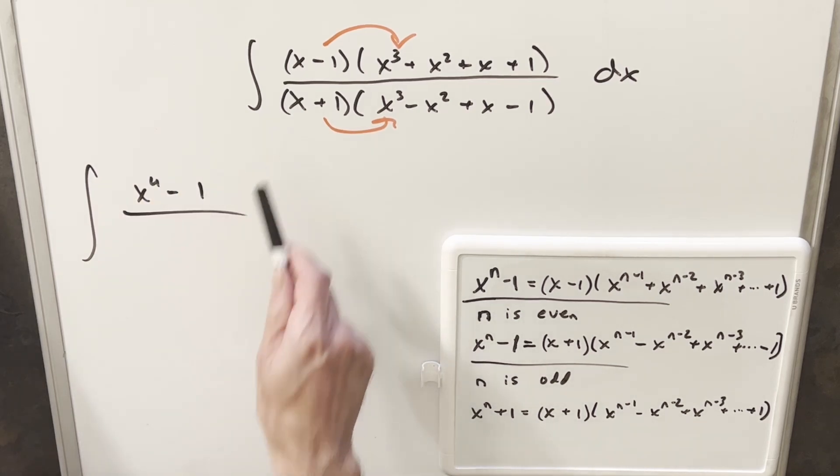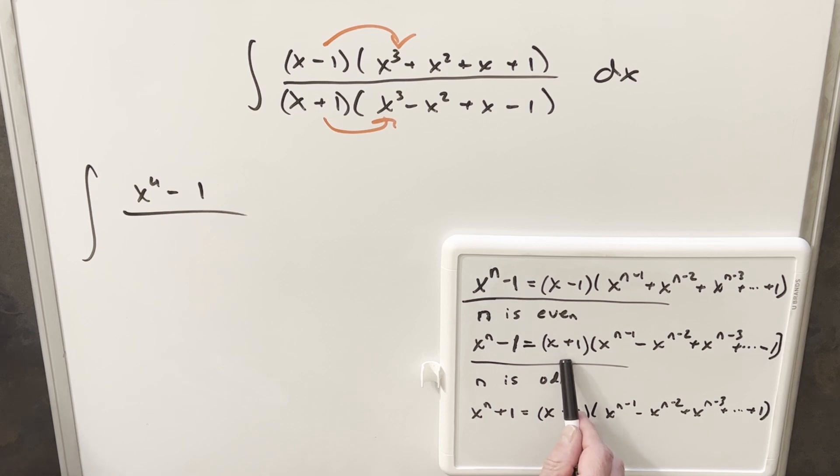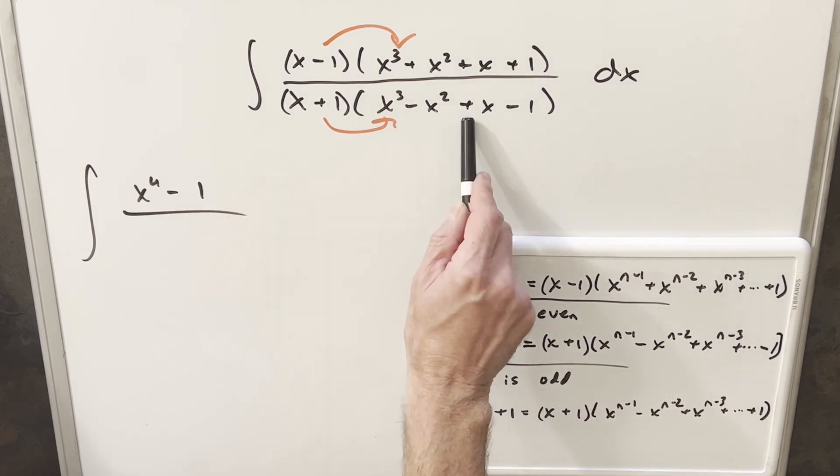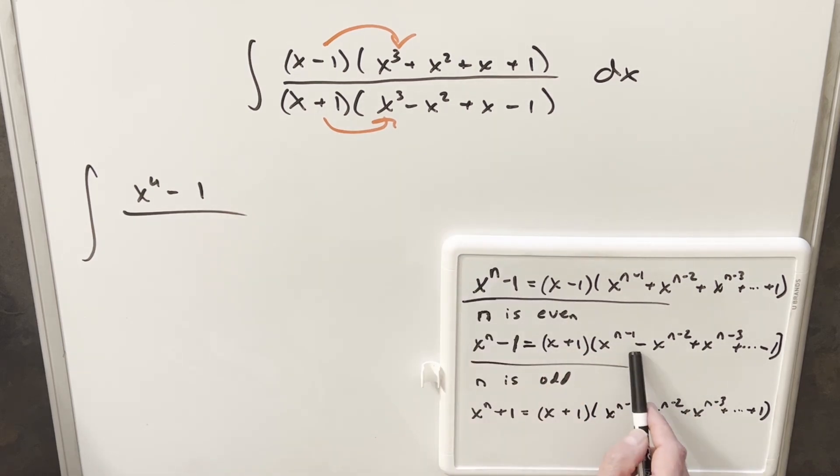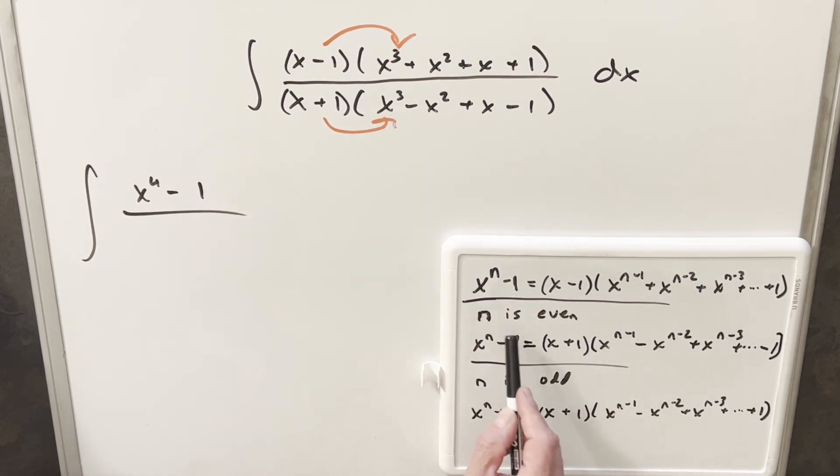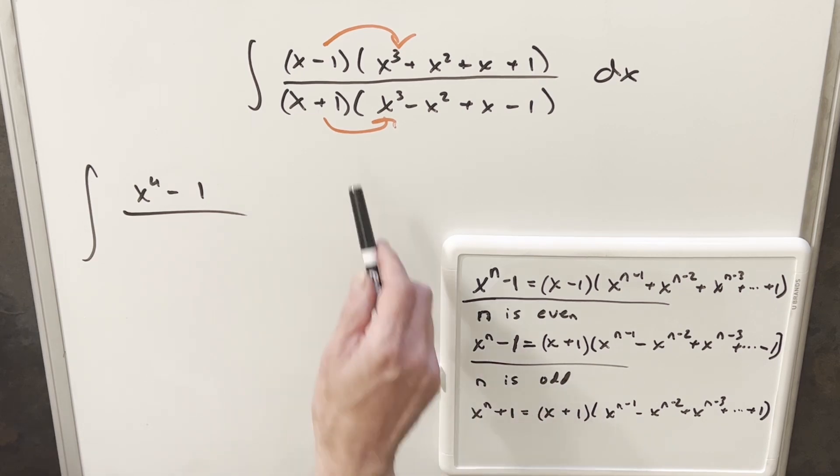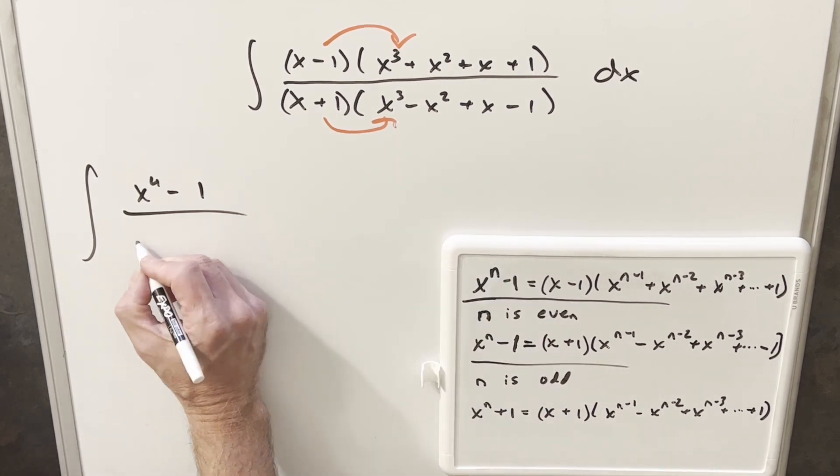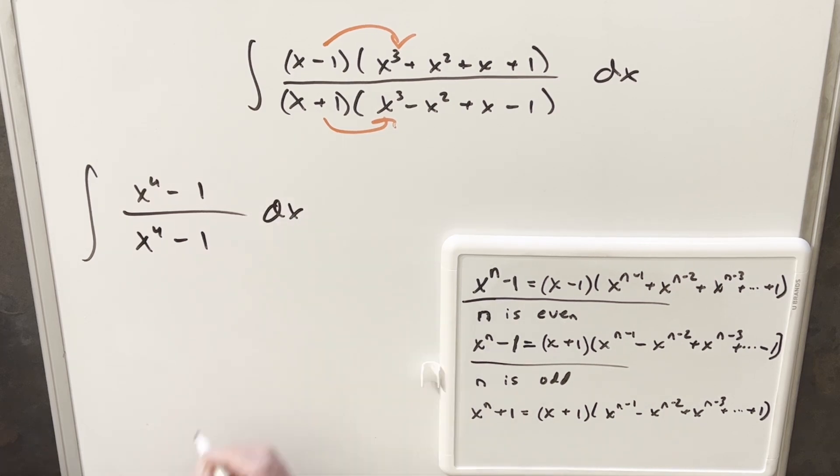And then for the denominator, we'll notice the similarity here to our second formula here. We have our x plus 1, x^(n-1). Very similar, but notice the alternating signs. Okay, so again, if n minus 1 is 3, then our n is going to be 4. So what that's telling me is this denominator is actually also x to the 4 minus 1.